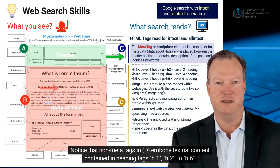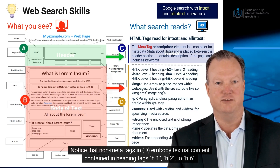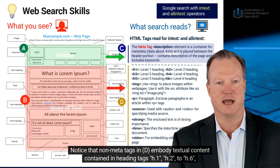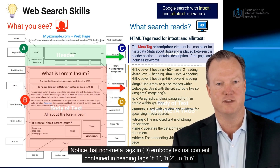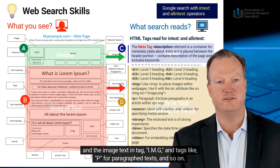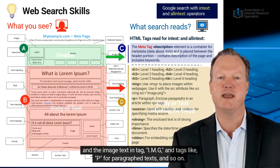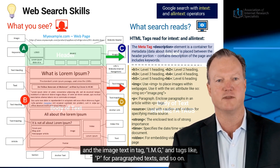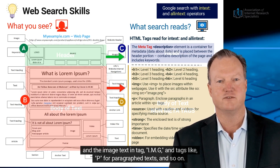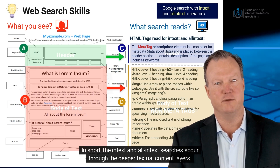Notice that non-metatags in D embody textual content contained in heading tags H1, H2 through H6, and the image text in tag IMG, and tags like P for paragraph texts and so on. In short,